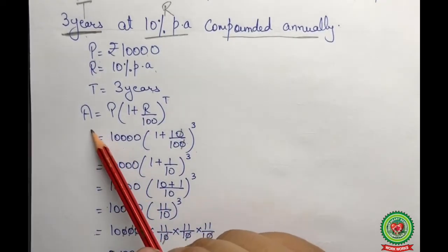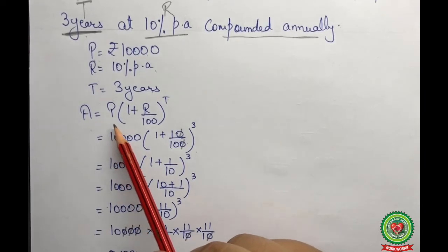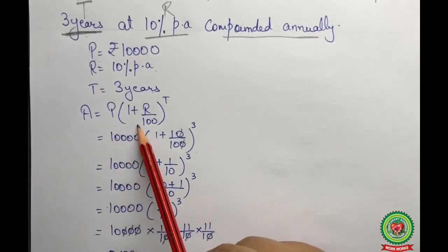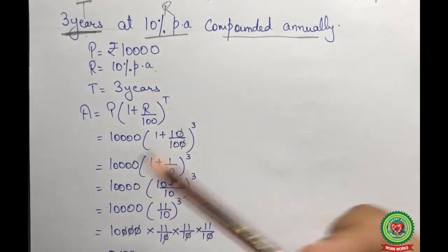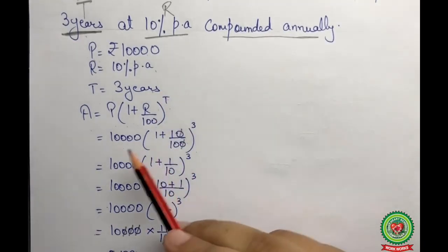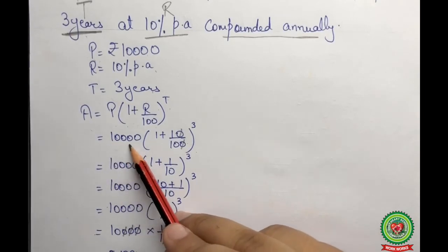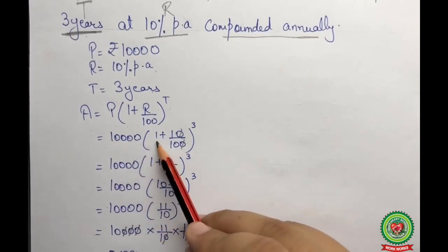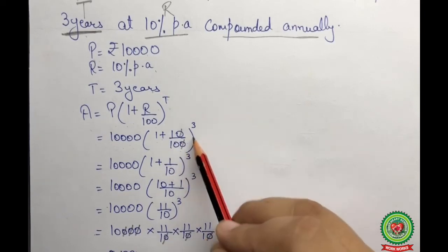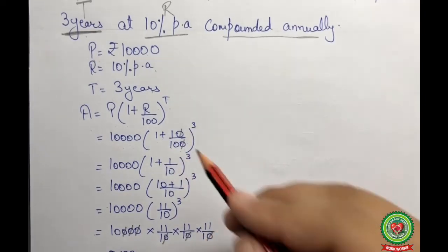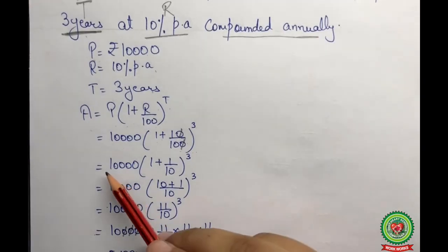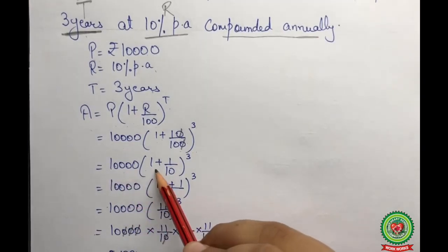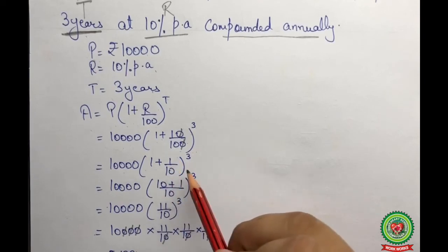We need to find the amount, so we apply the formula: Amount = P(1 + r/100)^t. Substituting the values, we get: 10,000 × (1 + 10/100)^3. We can cancel a zero, leaving us with: 10,000 × (1 + 1/10)^3.